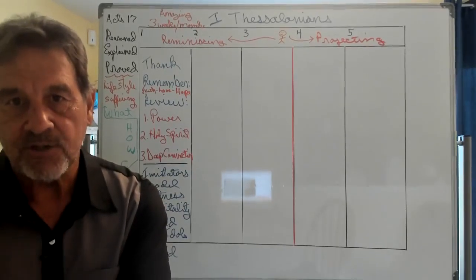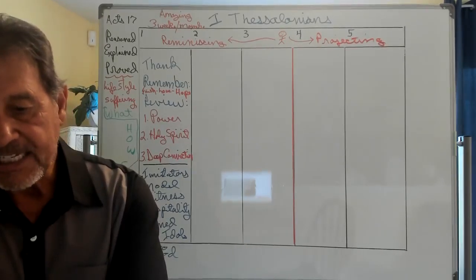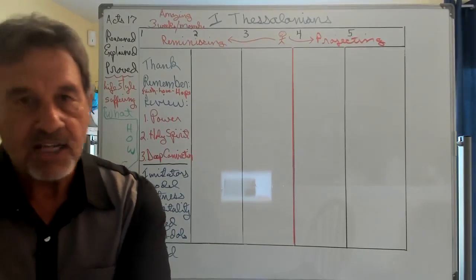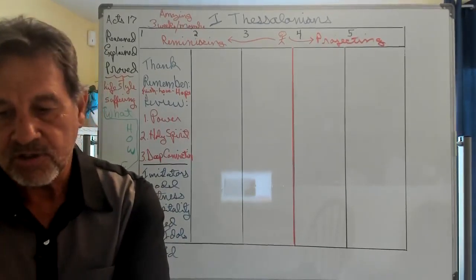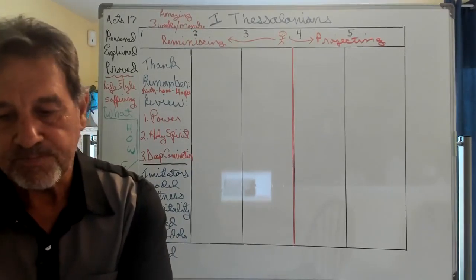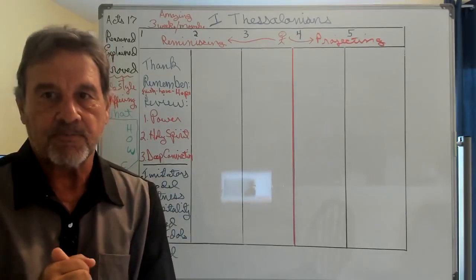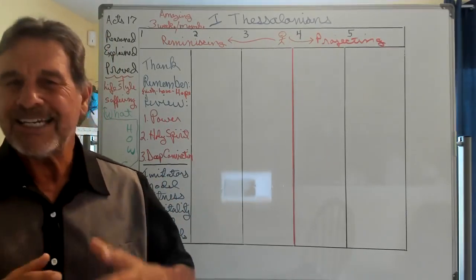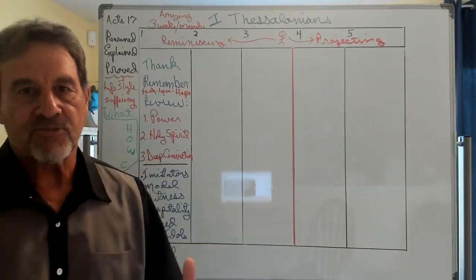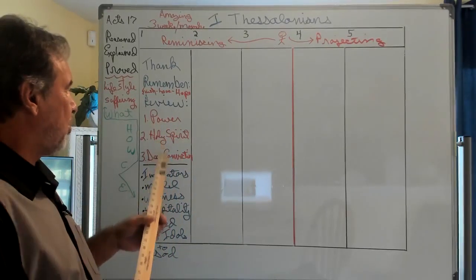Then in verse 4: Brothers loved by God, we know that he has chosen you. Now he's going to review. We know that he has chosen you because our gospel came to you not simply with words, but also with three things: with power, with the Holy Spirit, and with deep conviction.